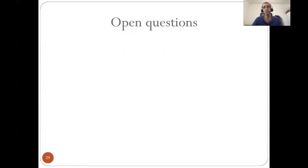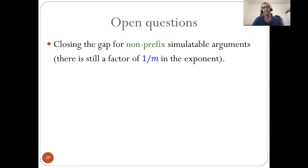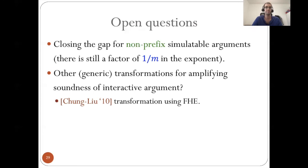For open questions: first, there is still a gap in the non-prefix simulatable argument case, with a factor of 1 over M remaining in the exponent. More importantly, can we come up with other generic transformations for amplifying the soundness of interactive arguments? We mentioned fully homomorphic encryption and noted that random termination cannot achieve better than 1 over M in the exponent. Perhaps there are other methods, maybe under weaker computational assumptions. Thank you everyone.